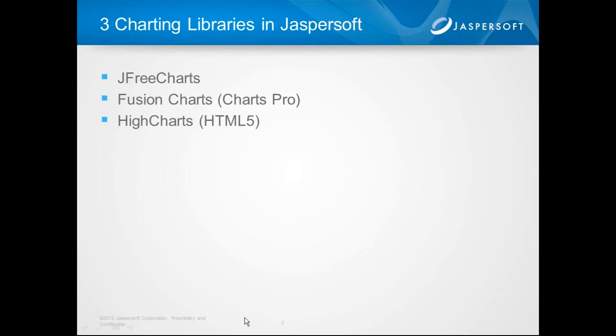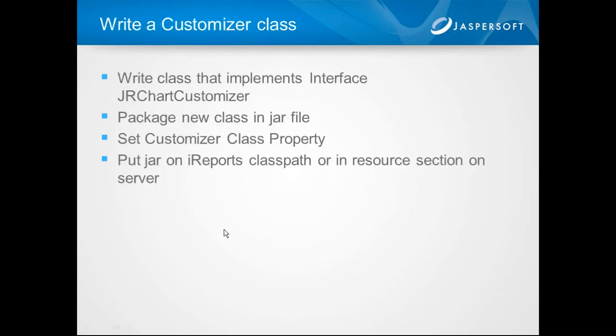The process for doing that: first you would have to write a class that implements a particular interface, which I'll demonstrate a little bit later. Then you have to package that new class in a JAR file — I'll demonstrate that process also. Then in iReports you have to tell the report that there exists a new class which can perform that piece of functionality, and you need to put that new class on the iReports classpath.